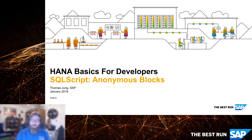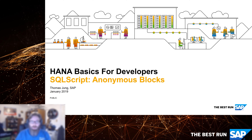Welcome back to HANA Basics for Developers. We've seen a couple of different ways SQL Script can be utilized via development objects — the stored procedure, the table function, the scalar function, and the newest addition, the libraries concept. But there's actually a way to use SQL Script without any kind of procedure, function, or library wrapper, and this allows us to use SQL Script directly within the SQL console or SQL command line, which can be a very powerful and useful technique if you're doing a lot of scripting of the database directly.